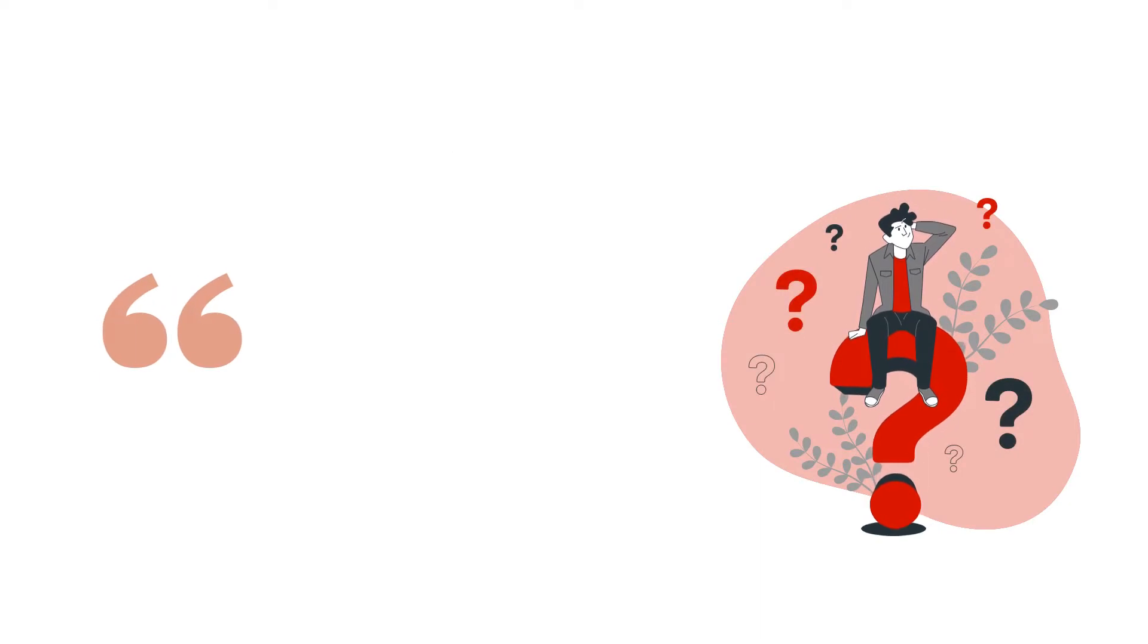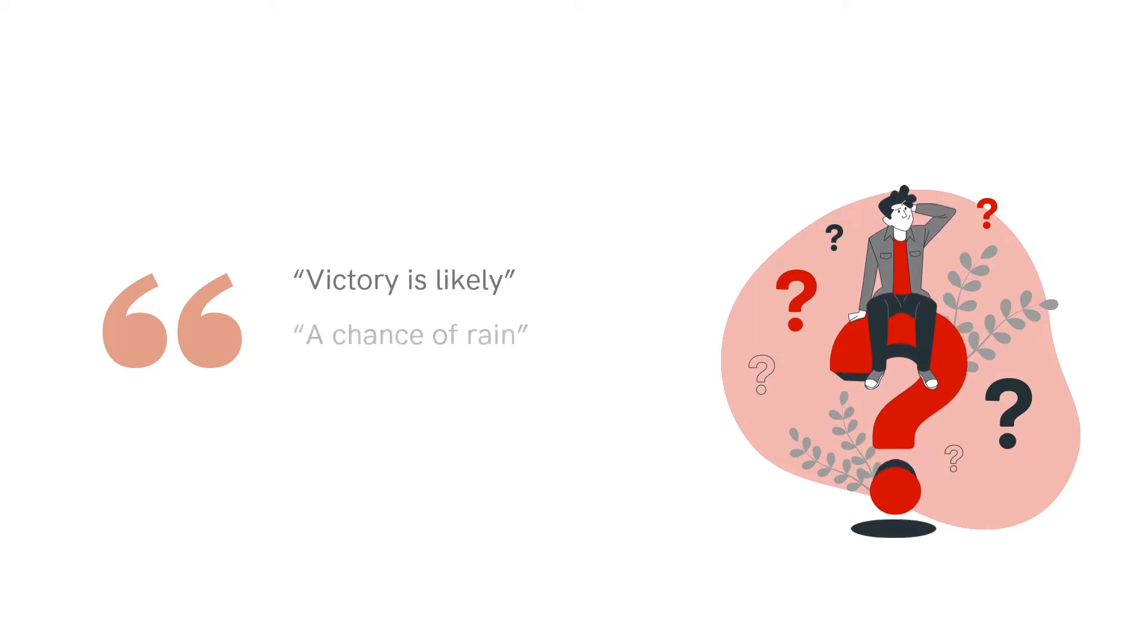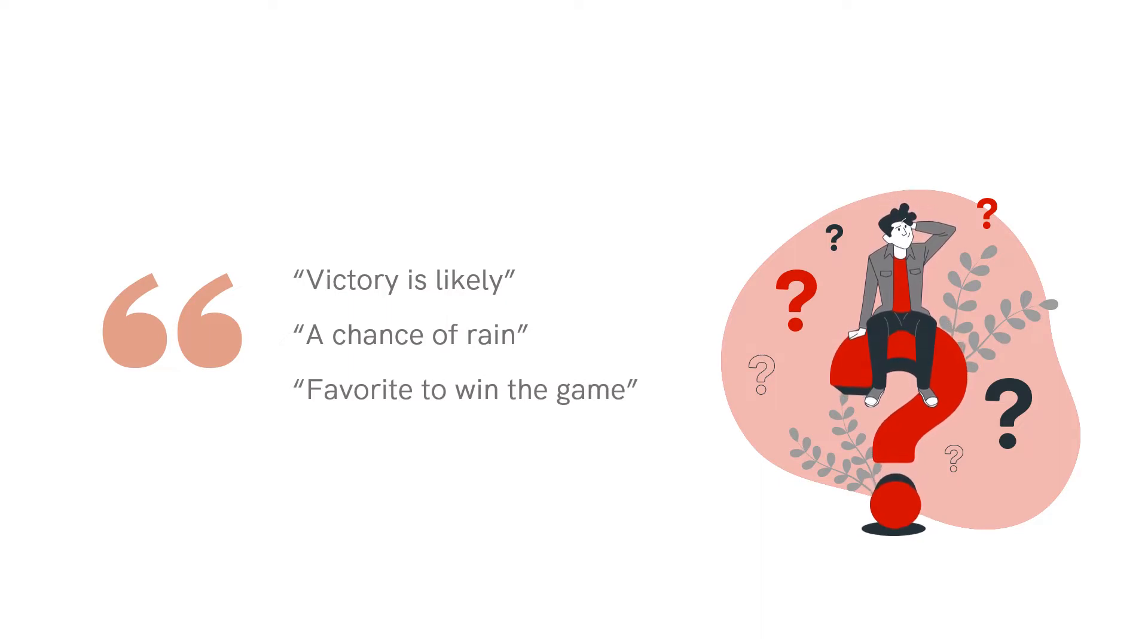People make predictions all the time, but they often use vague language such as victory is likely, there is a chance of rain, or the team is a favorite to win the game. Such predictions are quite useless unless they are properly quantified.